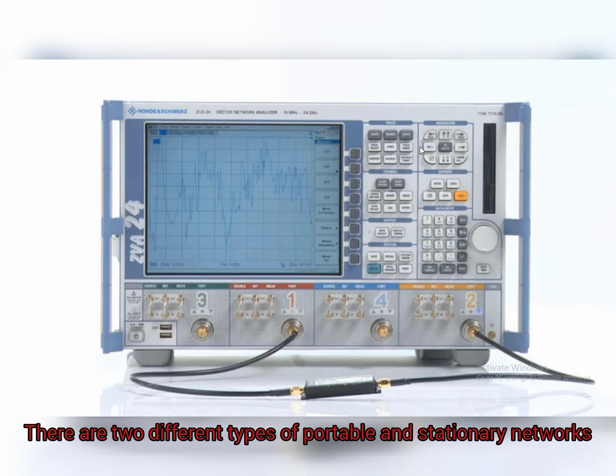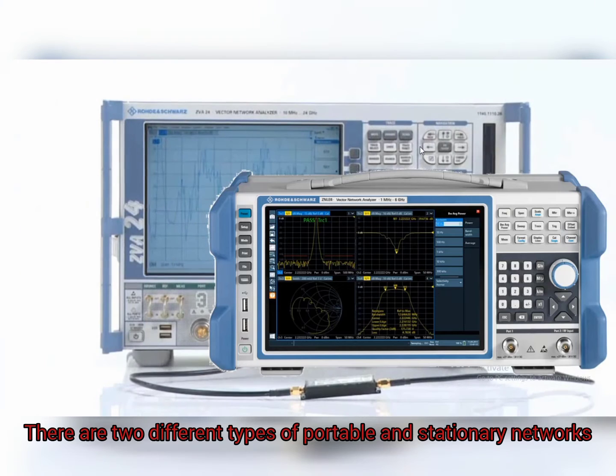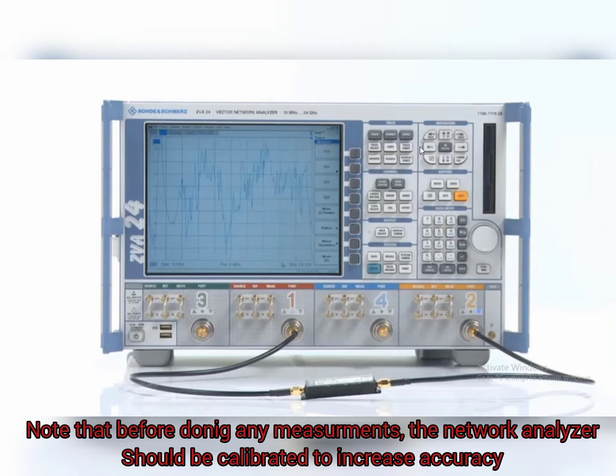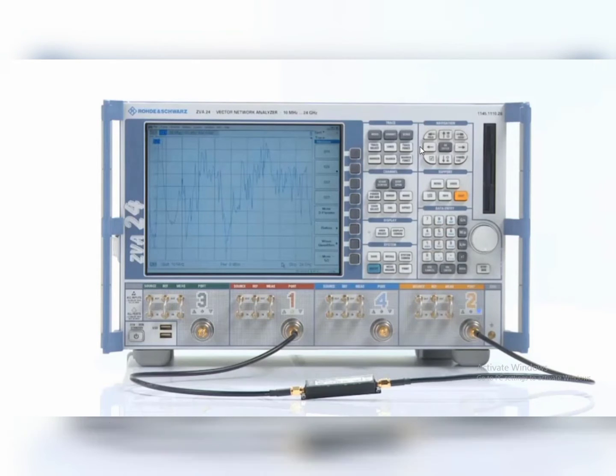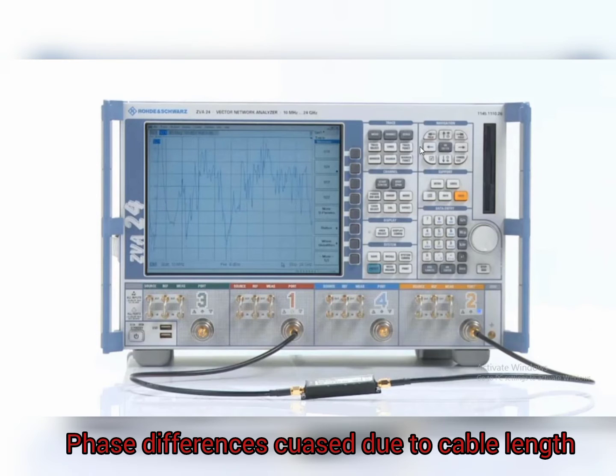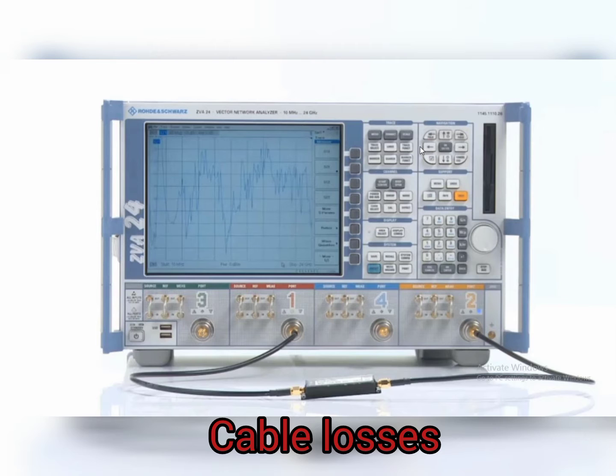There are two different kinds of portable and stationary networks. Note that before doing any measurement by network analyzer, it should be calibrated to increase accuracy. Calibration reduces the errors such as phase differences caused by cable lengths, crosstalk, cable losses, and others.